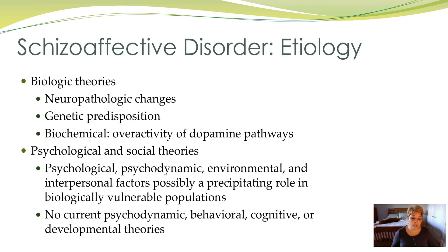Much like schizophrenia, there is a strong biological component. We know neuropathological changes occur, and we believe this is organic. From a psychosocial perspective, the world around the individual plays a participating role in making an already vulnerable person more likely to have symptom onset. A psychological or social environment is not likely to cause schizoaffective disorder, but in already biologically vulnerable people, it can hasten the onset of symptoms — not cause it, but hasten it.